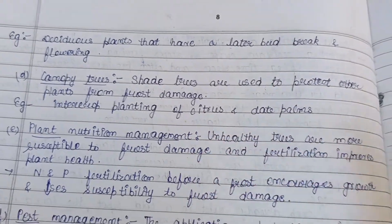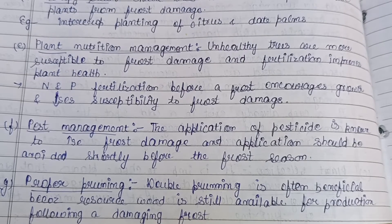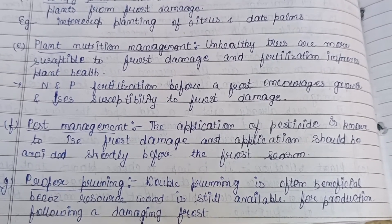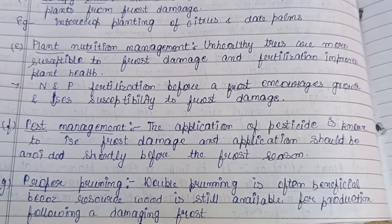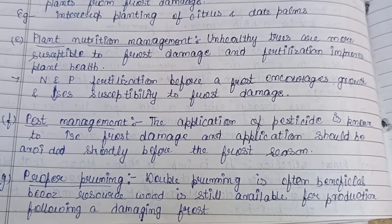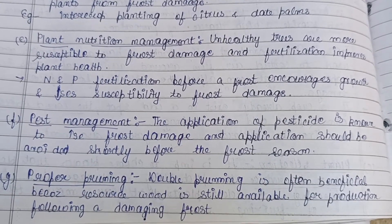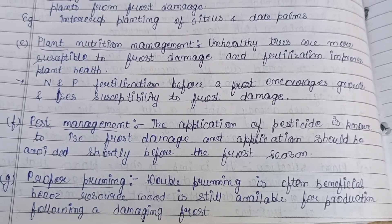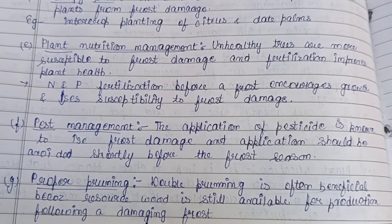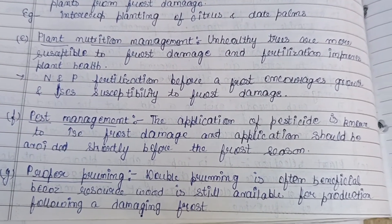Plant nutrition management is another passive method. Unhealthy trees are more susceptible to frost damage, so fertilization improves plant health. Nitrogen and phosphorus fertilization before a frost event encourages growth and decreases susceptibility to frost damage.